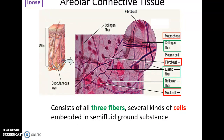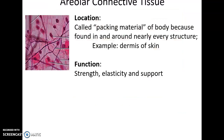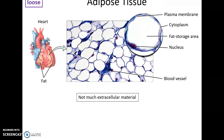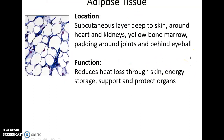Areolar connective tissue is a loose connective tissue where cells and all three kinds of fibers are scattered about in a semi-fluid ground substance. It is found as packing material all over the body, providing strength, elasticity, and support. Adipose tissue, or fatty tissue, has very large cells filled with triglycerides and very little extracellular material. It is found in the subcutaneous layer under the skin, surrounding many organs, and in bone marrow. It reduces heat loss, stores energy, and provides some protection for organs.